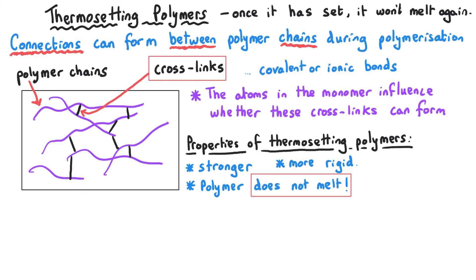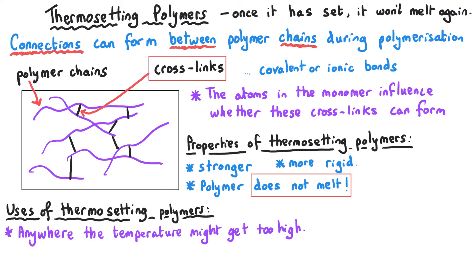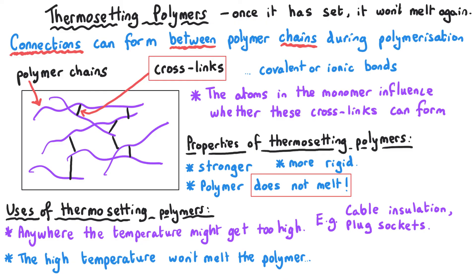We use thermosetting polymers in any situations where the polymer might have experience of a high temperature. A good example of this might be something in the electrical wiring system, perhaps a plug socket. When plugs are plugged in, the temperature can get quite high, and in certain types of polymers this might cause the plug to melt. And this is obviously what we do not want to happen, and so we choose a thermosetting plastic that is able to withstand this raised temperature.